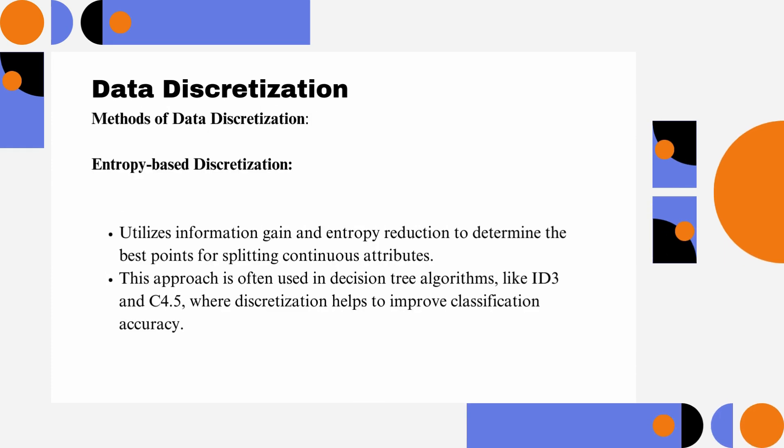Entropy-based discretization: Utilizes information gain and entropy reduction to determine the best points for splitting continuous attributes. This approach is often used in decision tree algorithms, like ID3 and C4.5, where discretization helps to improve classification accuracy.